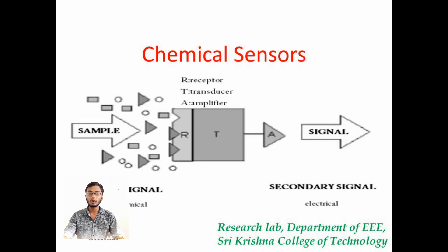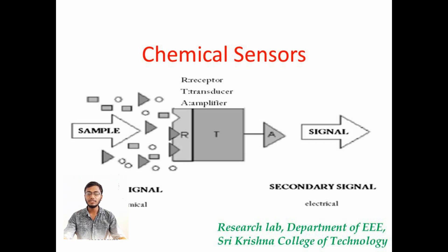I am going to explain you about the block diagram of a chemical sensor. A chemical sensor has a test sample. The test sample is given to a receptor which checks the composition of the chemical reaction. Then the receptor is connected with the transducer. The transducer collects the information from the receptor and sends it to a signal amplifier. The amplifier amplifies the signal from the transducer and sends it to an output signal.